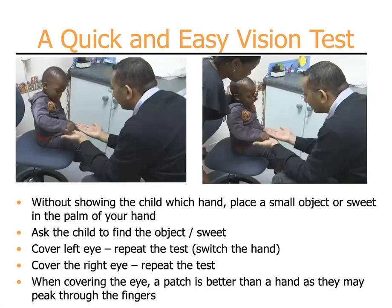One quick and easy vision test for younger children involves placing a small sweet or object of interest in the palm of your hand. Do this without showing the child which hand you're placing it into. Then open your hands and see if the child can identify which hand has the sweet or object. Once you've done this with both eyes open, you may repeat it with first the left eye covered and then the right eye covered. It is best to use a patch or occluder rather than a hand, as the child may peek through the fingers.